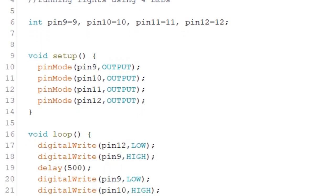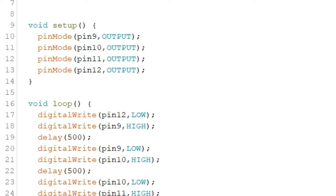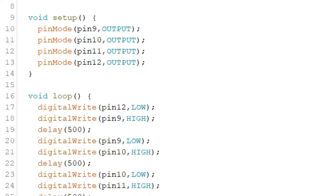For the loop function, what we want to do is to turn on an LED and at the same time turn off the LED that was previously turned on. In this way, only one LED will light up at any given time.